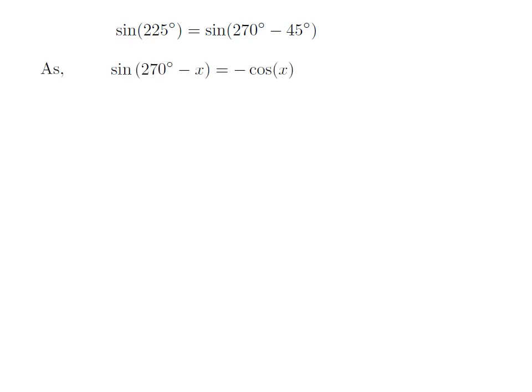As we know, the trigonometry identity sine of 270 degrees minus x is equal to minus cosine of x.